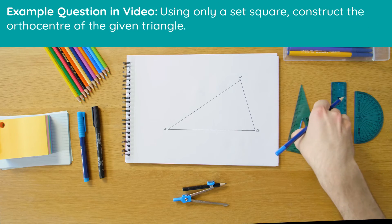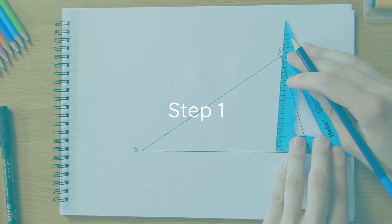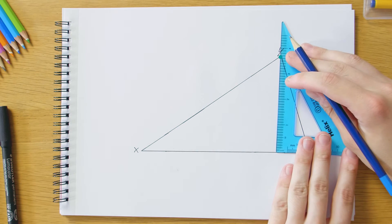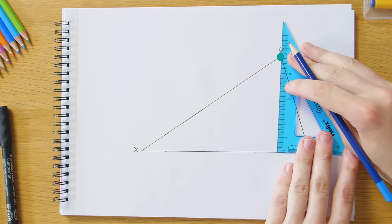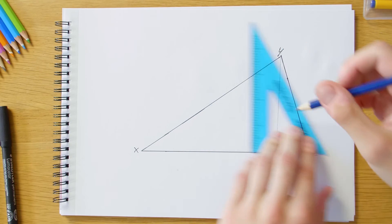Okay, so our first step here is just going to be to grab the set square and our pencil, and we're just going to go perpendicular to the side XZ in this case, which passes through the vertex Y. Just kind of get it nice and straight and lined up and draw your straight line up.